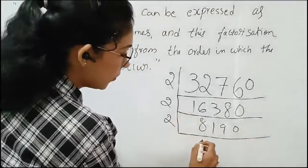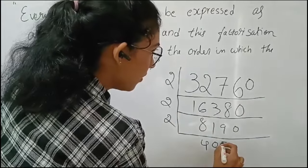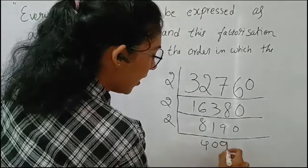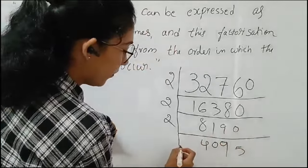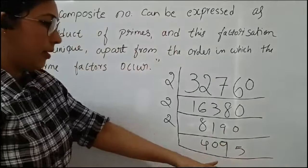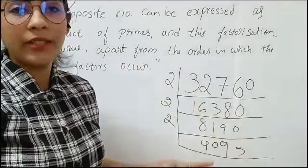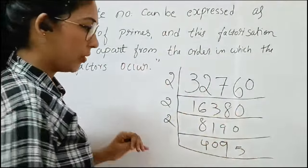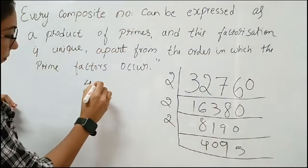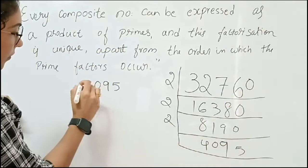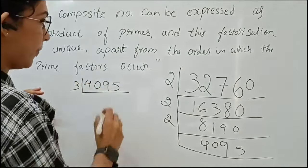Continuing: 2, 4, 0 — next factor gives 9, 5, 5. The ones place is 1, so we can divide it with either 5 or 3. Writing on this side, let's divide it with 3.